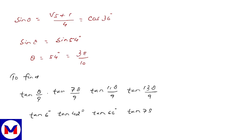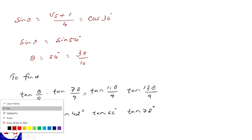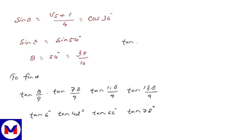To evaluate this product, we use the identity: tan(A) · tan(60°−A) · tan(60°+A) = tan(3A). We observe that 6° and 66° can be written as 60°−54° … actually, we group: tan6° · tan66° with tan(60°−6°) = tan54°, and tan42° · tan78° with tan(60°−18°) = tan42°, tan(60°+18°) = tan78°.